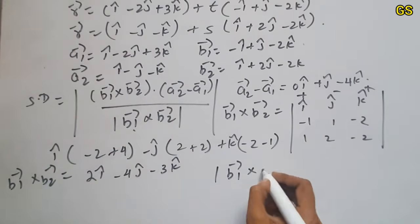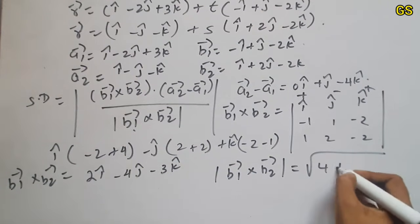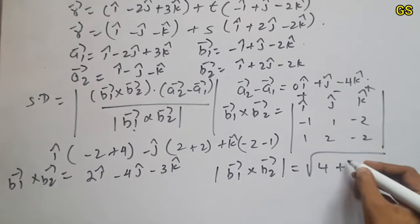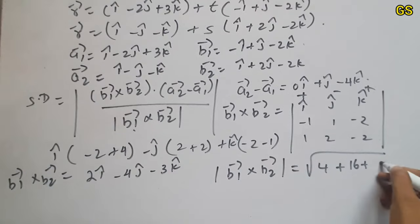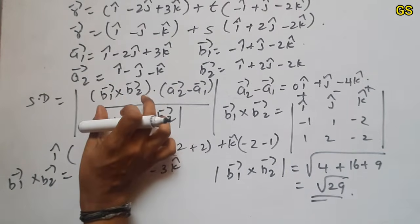So this is b1 cross b2. Root of 2 square is 4, plus 4 square is 16, plus 3 square is 9. Root of 29.